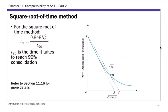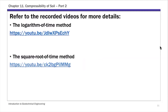For t90 and for different degrees of consolidation U, you have different time factors T sub V from Table 11.7. For both the logarithm of time and square root of time methods, I've posted short videos showing the detailed step-by-step calculation — you can check those out.